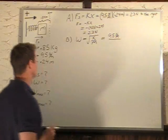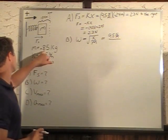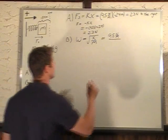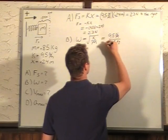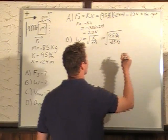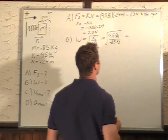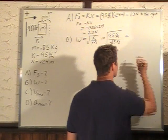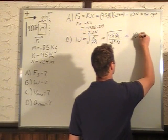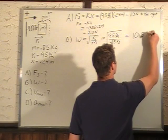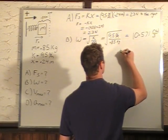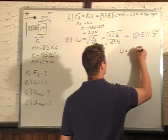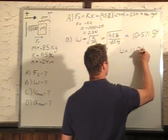And divide our mass of 0.85 kilograms. And this gives us a value of 10.571 radians per second. Now we round this to get omega of 11 radians per second.